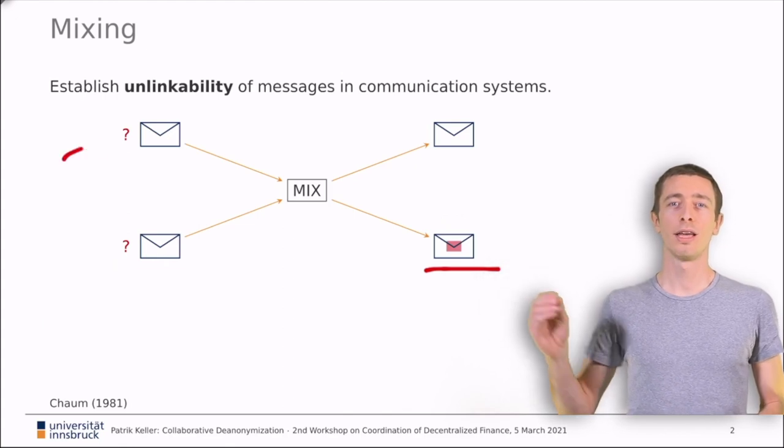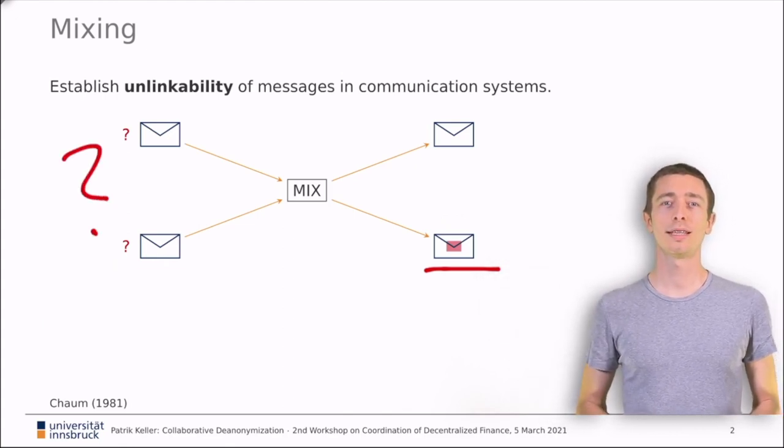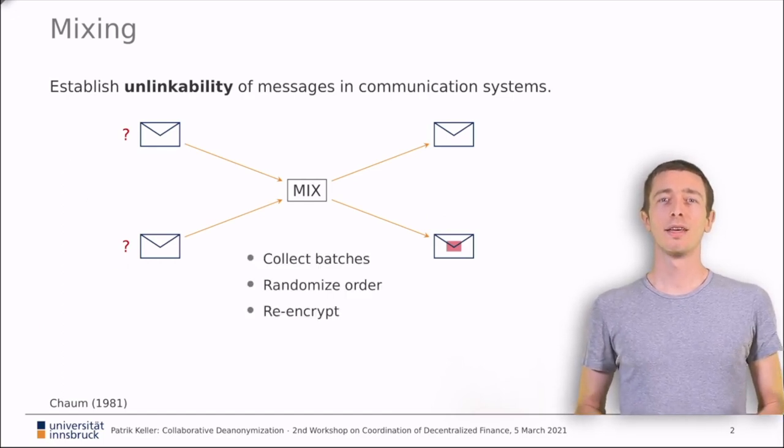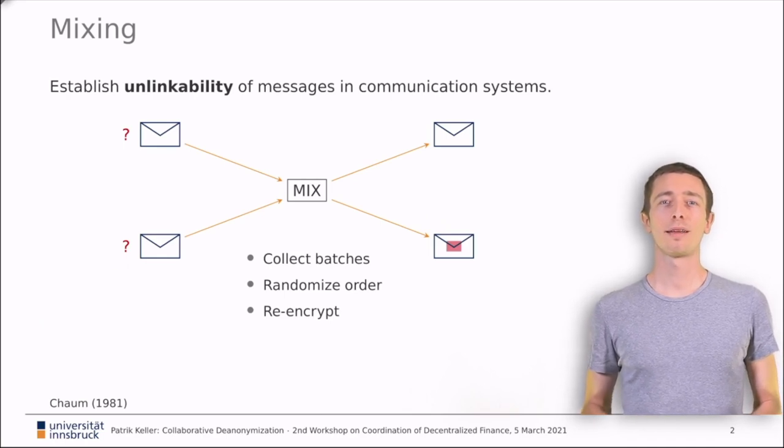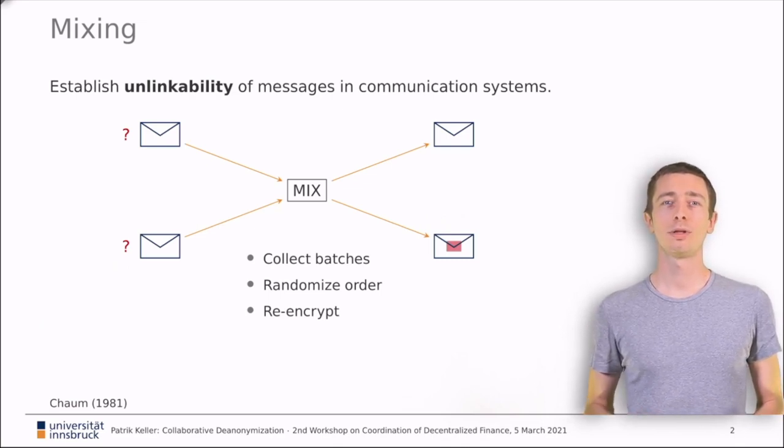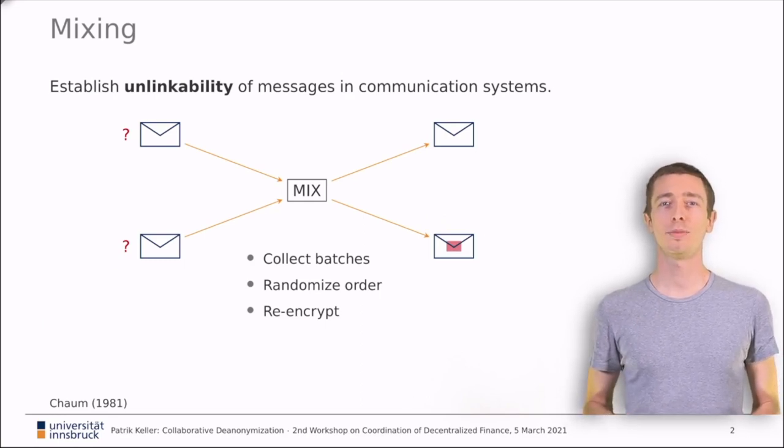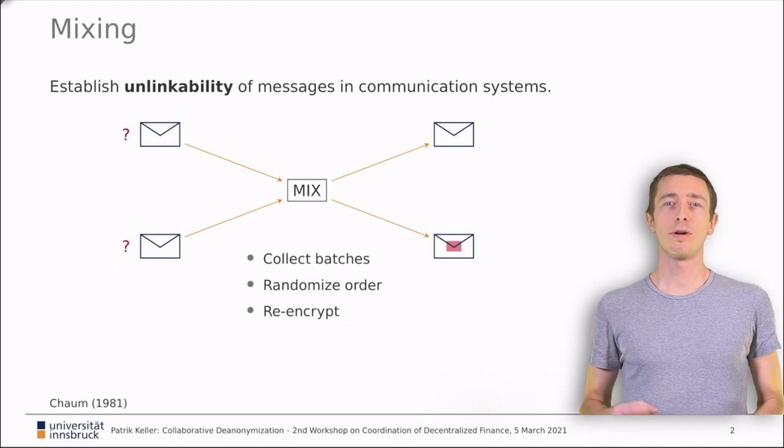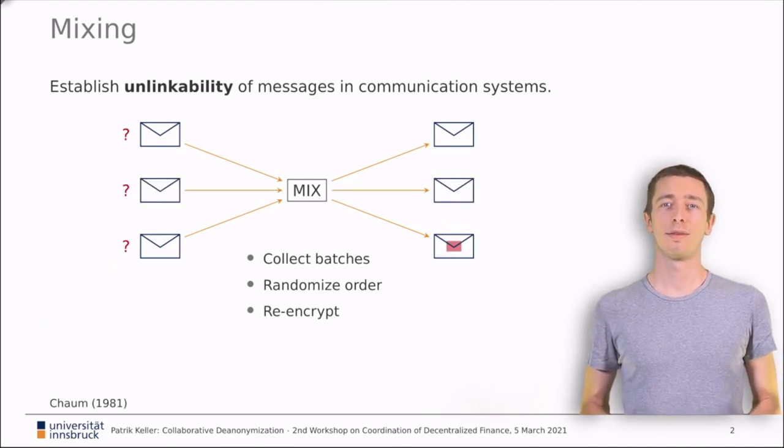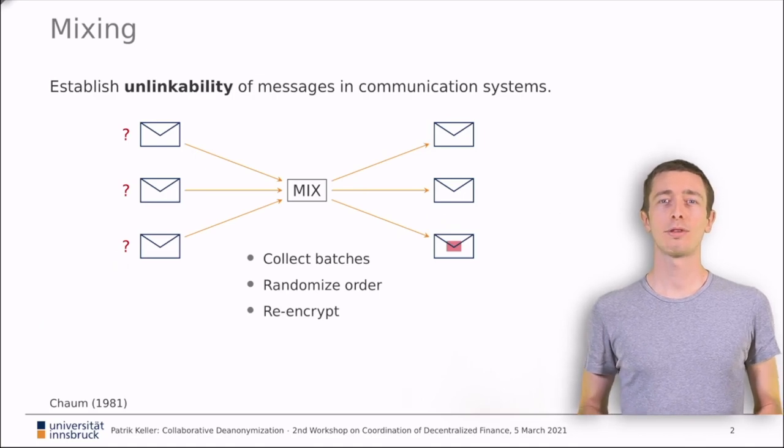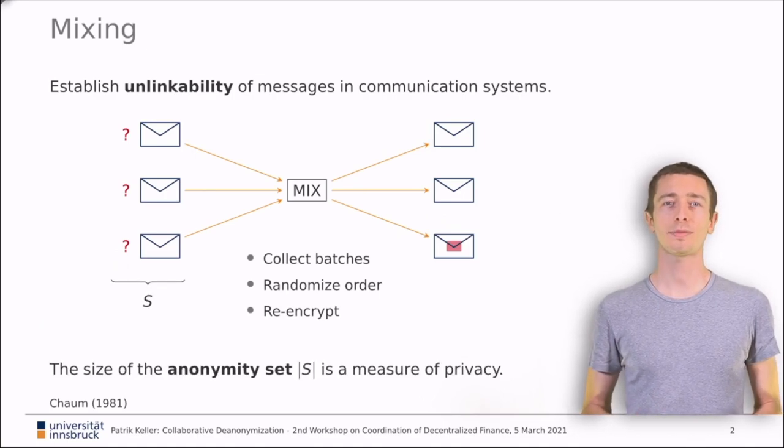So when you look at one output, let's say the one with the red marker, you do not know which of the two senders has actually sent this message. In practice, mixes usually realize this property by collecting batches of messages, obviously you need more than one, randomizing the order and re-encrypting the contents. The latter ensures that somebody watching the inputs and the outputs cannot link based on bit patterns. Now, it is obvious that the bigger the batch size, the better the anonymity provided by the mix. Every additional input increases the what we call anonymity set. The size of the anonymity set becomes a measure for privacy.